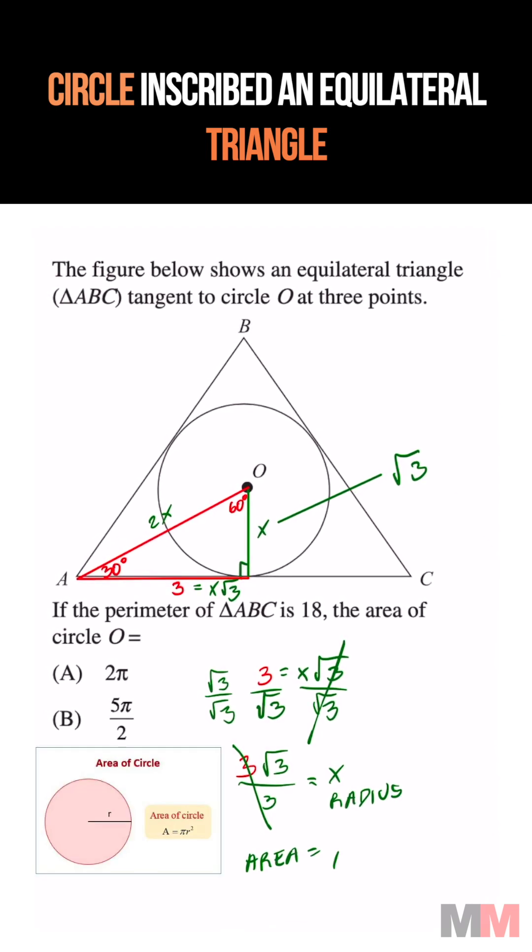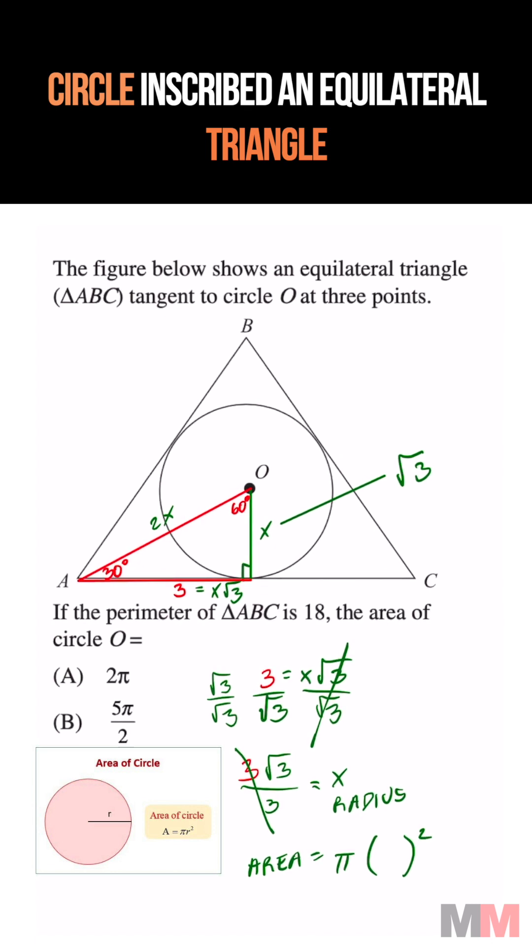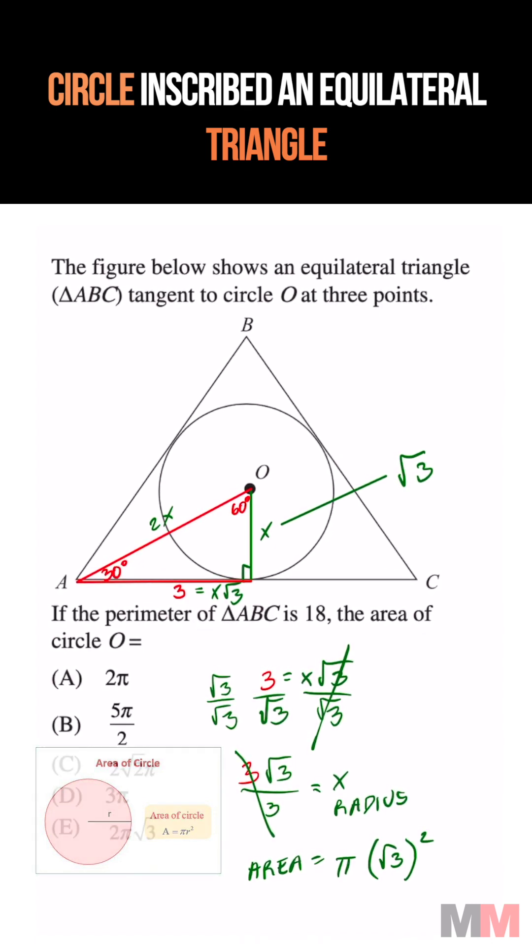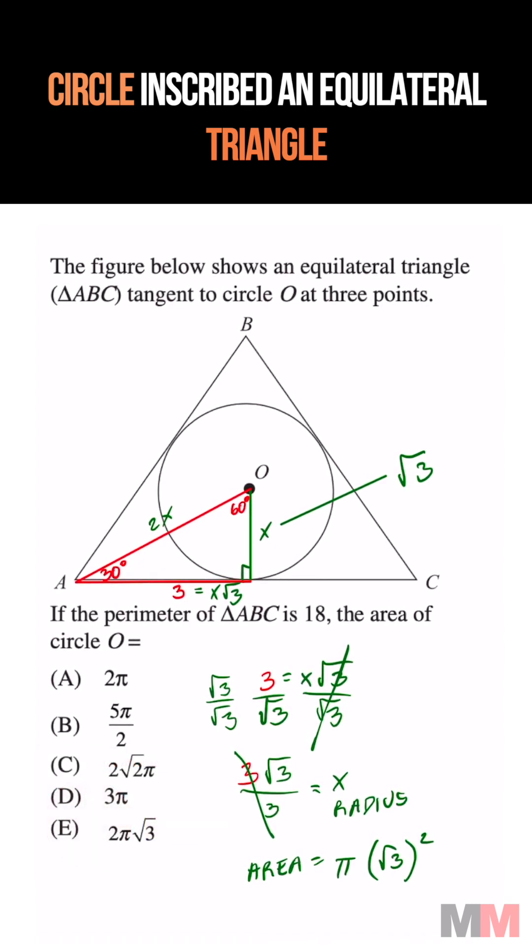To find the area, it's going to be pi radius, which is the square root of 3 squared, and that's going to simplify to letter choice D.